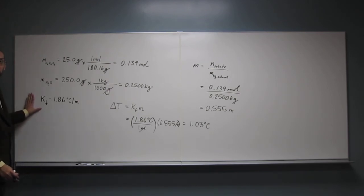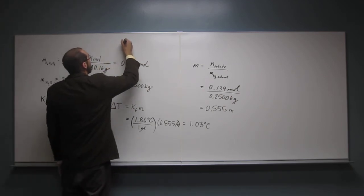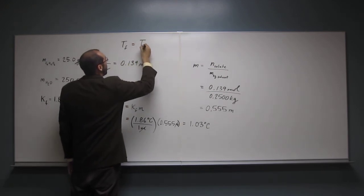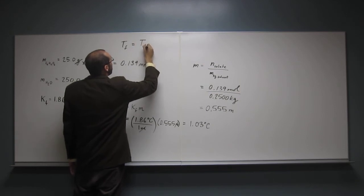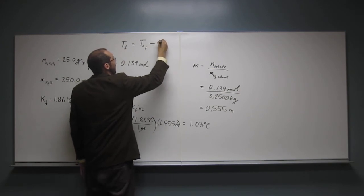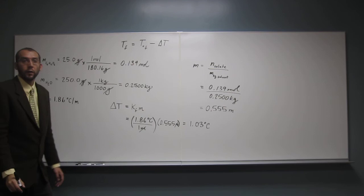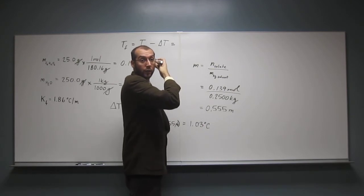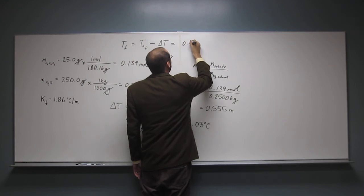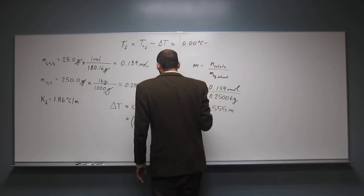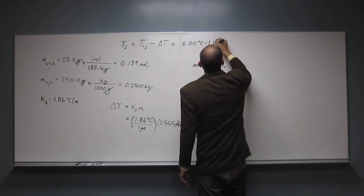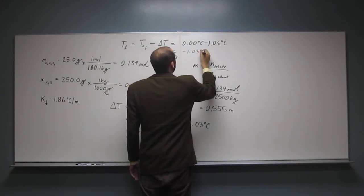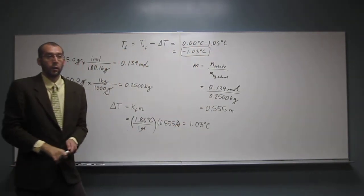So freezing point depression, remember. What's the new freezing point? It's going to be the original freezing point minus the change in temperature that we just figured out. So, the original freezing point of water is 0.00 degrees Celsius. And we're going to subtract 1.03 from that. So that's going to give us a number of negative 1.03 degrees Celsius for our new freezing point.